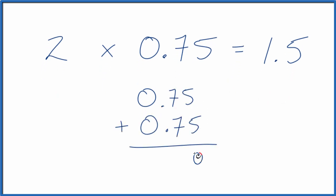5 plus 5, that's 10. Put our 1 here. 7 plus 7, that's 14 plus 1, 15. And we have 1, 2 decimal places, 1, 2. So we end up with 1.5. That's what we got before, or 1.50.